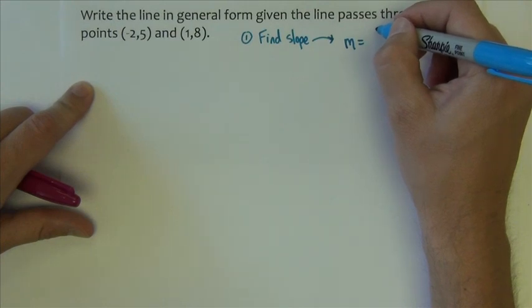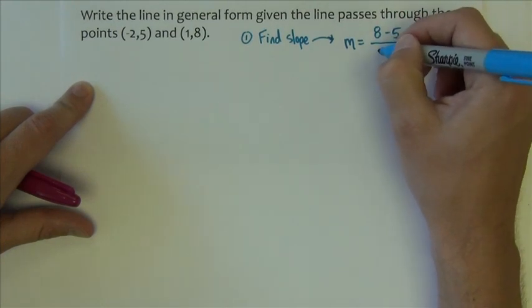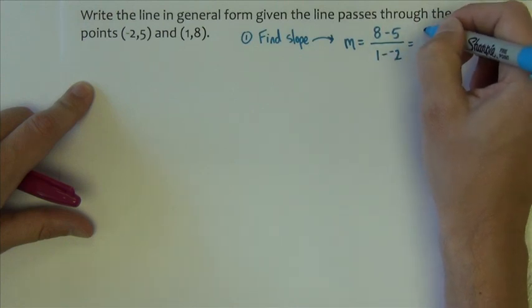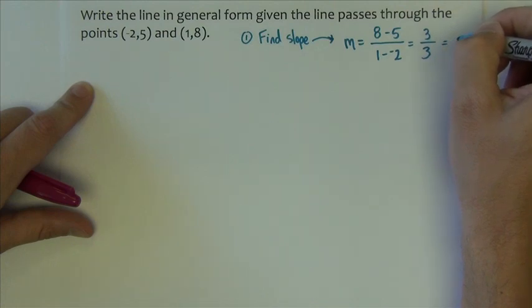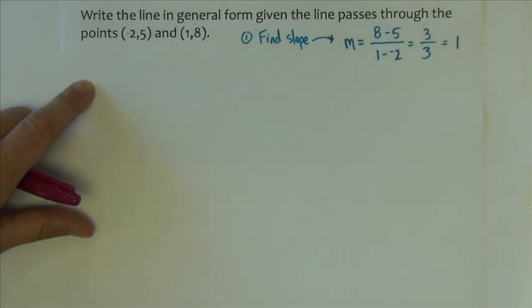We subtract the y's on top, so 8 minus 5 divided by, subtract the x's on bottom, 1 minus negative 2 gives us 3 divided by 3, which gives us 1, a relatively easy slope to work with. That's nice.